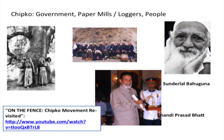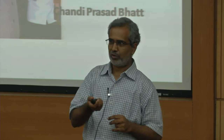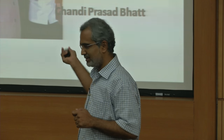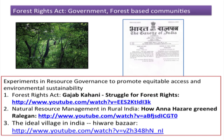Sundarlal Bahuguna talks about the difference between a temporary economy and a permanent economy — if you exploit the forest only for employment and income generation it's a temporary benefit, but in a few years there will be no forest. He also talks about differences between men and women — in the Chipko movement, men wanted to cut trees to make cricket bats while women wanted the trees to remain because they protect the soil, prevent floods, and provide fodder. There is a similar movement in Karnataka called Appiko — 'Appiko' in Kannada means 'to hug.'